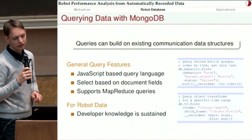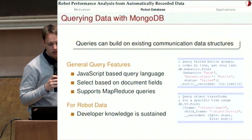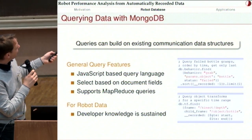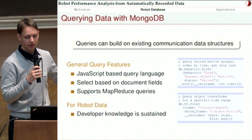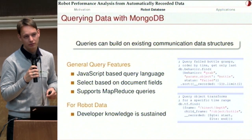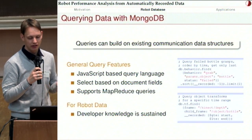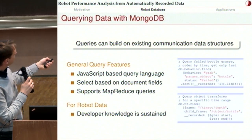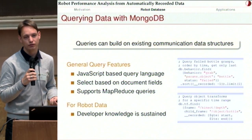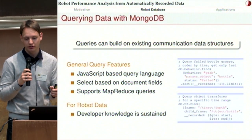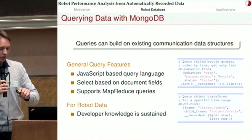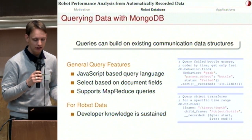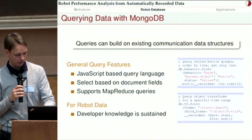Queries are built in MongoDB using a JavaScript-based query language. On the right you see two queries. The upper one queries a collection called 'behavior' in which we store information about executed behaviors — this particular query gives us the document that describes the execution of grabbing a bottle the last time it failed. That easily allows us to get the time frame of the failed execution. And then in the second query, we use the start and end time determined in the first query to get all the data related to that time period. You can select based on document fields, query into sub-documents, and it also supports the MapReduce paradigm — there's an example in the paper.